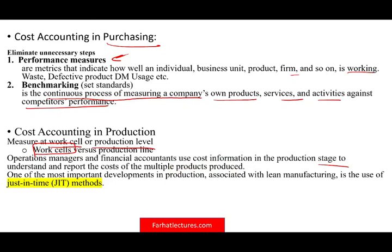In production, you can also use the just-in-time method rather than buying large inventory. One of the most important developments in production, associated with lean manufacturing, is just-in-time, which tries to minimize inventory on hand. Inventory is a cost — when you buy it, you have to store it, manage it, possibly buy insurance, and it takes up space. Try to have lean manufacturing, and part of that is just-in-time inventory. We'll talk about this more in future chapters.